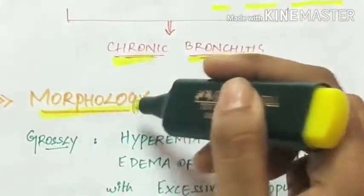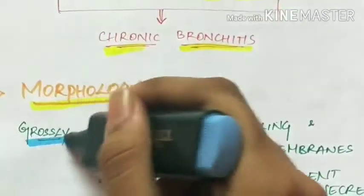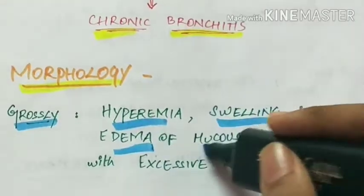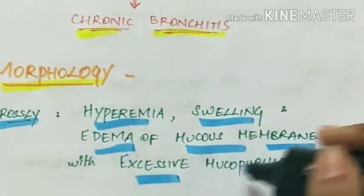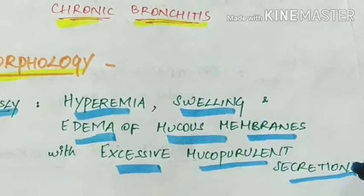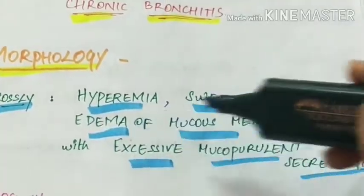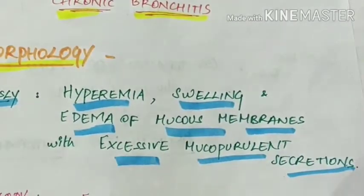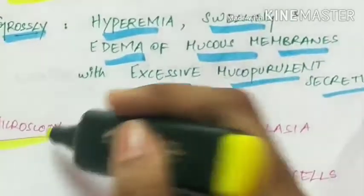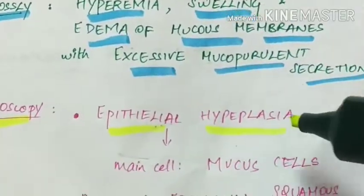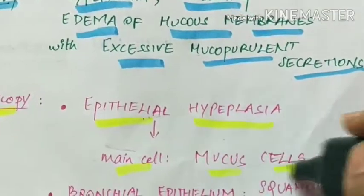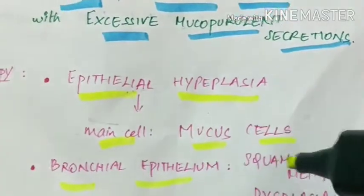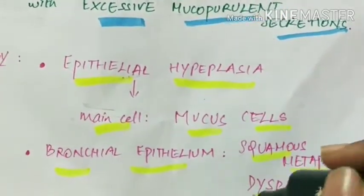Morphology of chronic bronchitis. Grossly there is hyperemia, swelling and edema of mucous membranes with excessive mucopurulent secretions. Microscopically there is epithelial hyperplasia with the main cell being the mucous cell, and the bronchial epithelium shows squamous metaplasia or dysplasia.